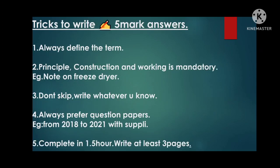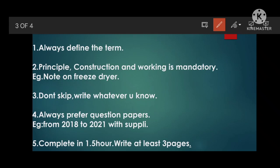Now let's move to tricks for five-mark answers. The golden point: always define the term first — this applies in all subjects. Write definition first, then principle, construction, and working — these are mandatory for five marks. For advantages and disadvantages in five-mark answers, you get some subsidy — write them only if the question specifically asks for them.